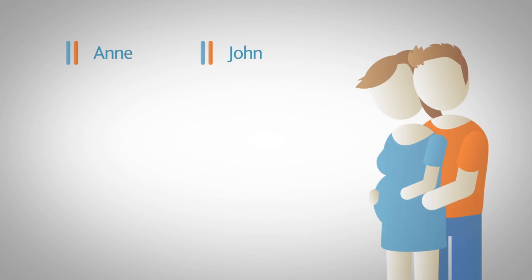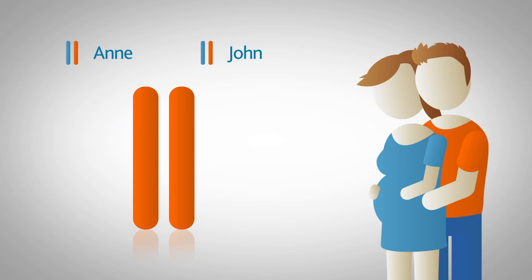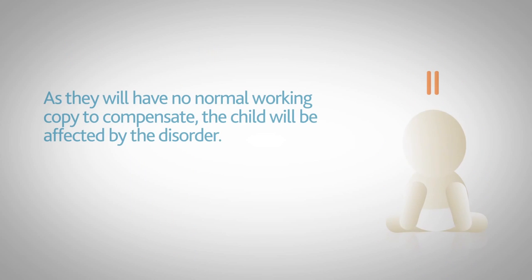However, when it comes to having children, if Anne and John both pass a copy of this non-working gene onto a child, the child will inherit two non-working copies of the gene. As they will have no normal working copy to compensate, the child will be affected by the disorder.